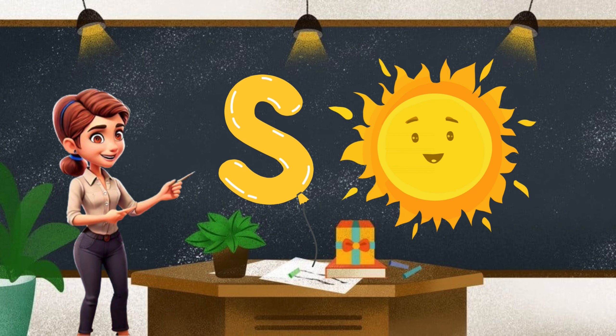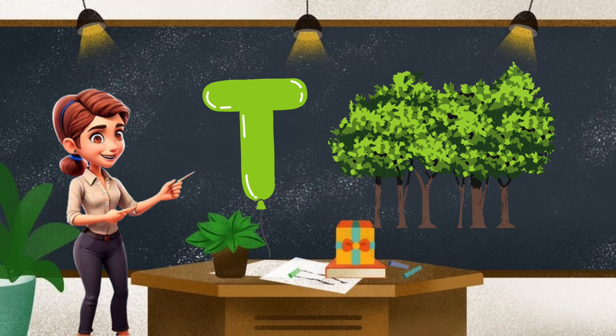S. S for sun. You have to comment what is the color of the sun. T. T for trees. It's green.